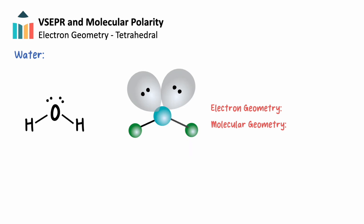Water replaces another of our four domains with a lone pair of electrons. Its electron geometry remains constant as tetrahedral, as it retains a total of four domains, but its molecular geometry can now be identified as bent, as the three atoms form an angular line.